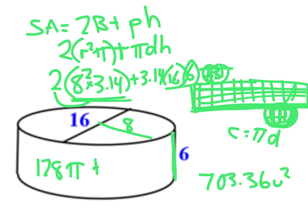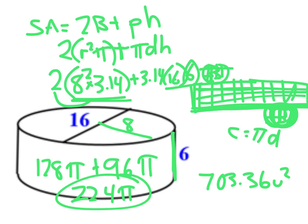And over here I have 16 times 6, which is 96, 96 pi. So I could add these two together and get 224 pi, and then type it into my calculator. Which of course gets you still the same answer of 703.36 units squared.